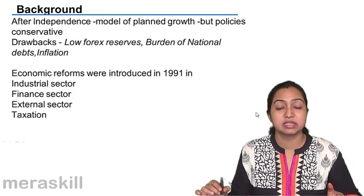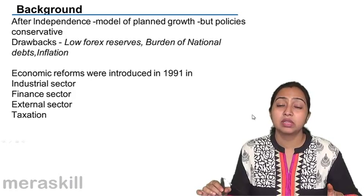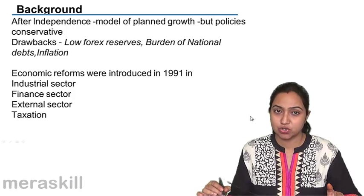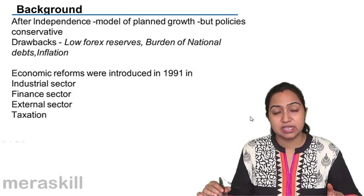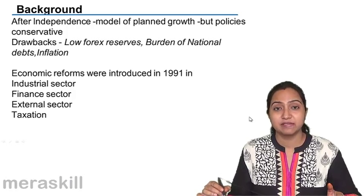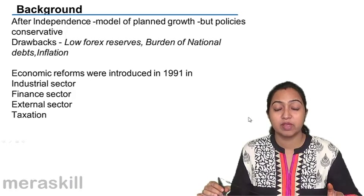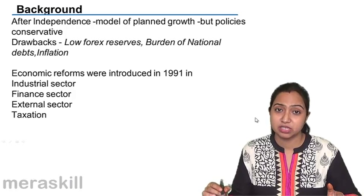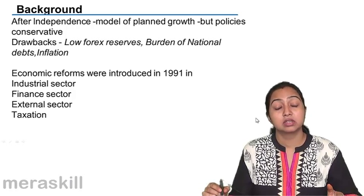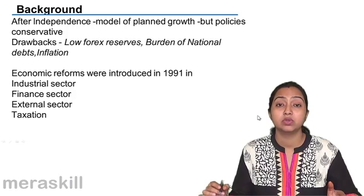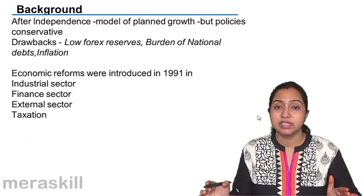As we all know, we had studied this earlier, that after independence, the main objective of the government at that time was to make India a self-reliant country. For that purpose, it was necessary that we produce our own goods and become self-sufficient in the field of agriculture, where we can feed our people on our own, as well as in the production of goods required by the people. For that purpose, it was important to set up manufacturing industries. So the Planning Commission was set up, plans were made, and according to those plans, the government worked to achieve its targets.